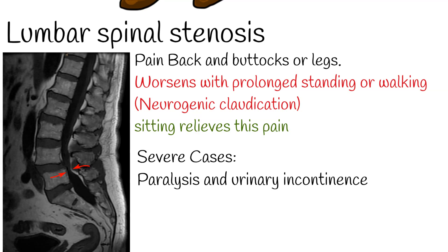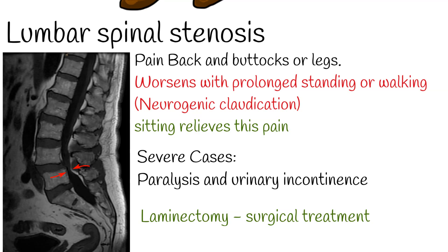Individuals are generally advised to avoid stressing the lower back. Medication treatment efficiency is under question. Laminectomy is the most effective of the surgical treatments. The prognosis in most cases is good because symptoms are mild to moderate and don't get worse over time. But in some cases it can worsen, and surgery can be an effective treatment only for the short term. Generally, lumbar spinal stenosis occurs in 7% of the adult population, but most of them are asymptomatic.